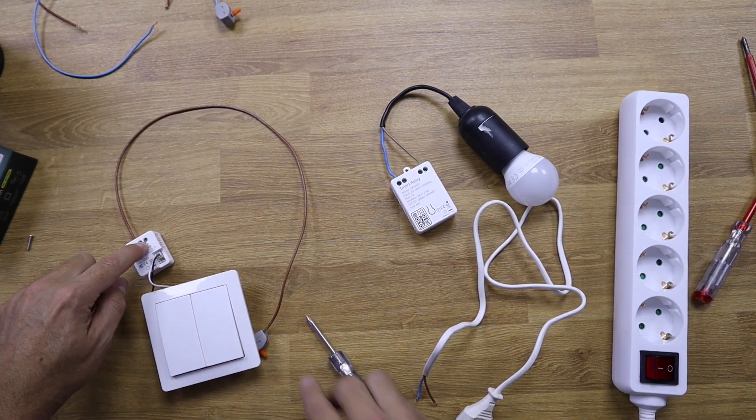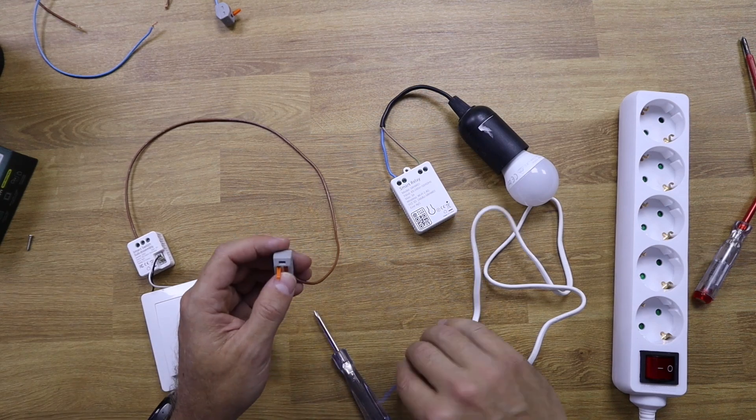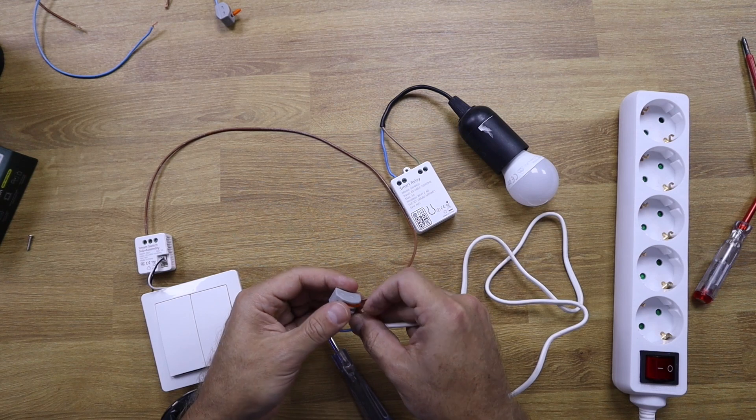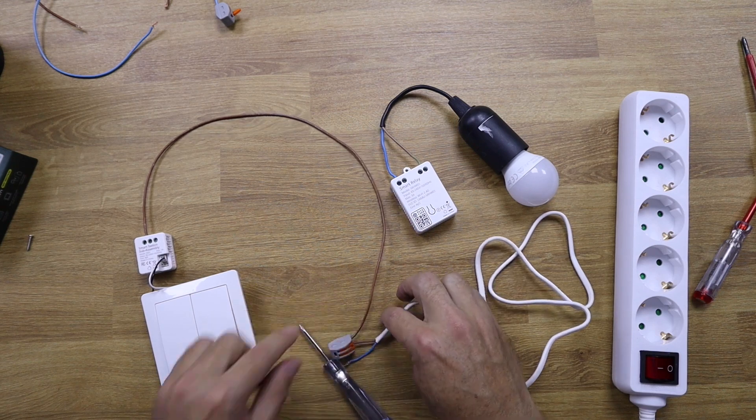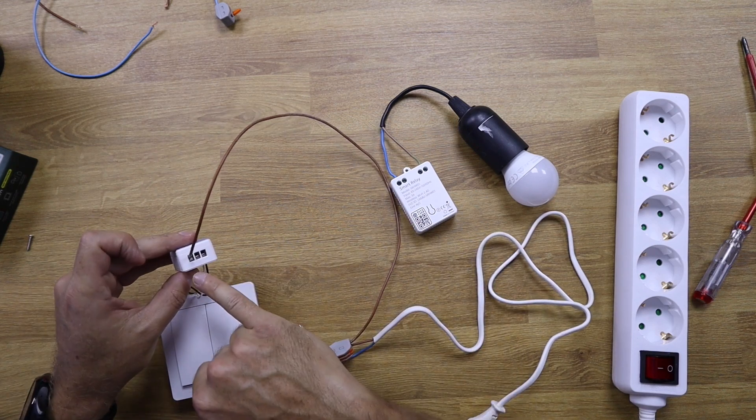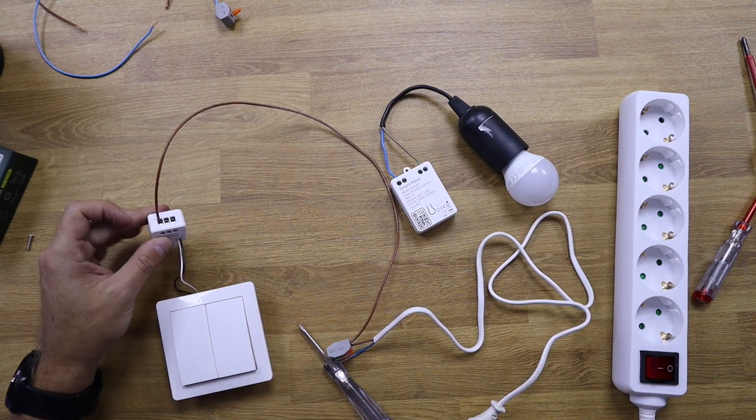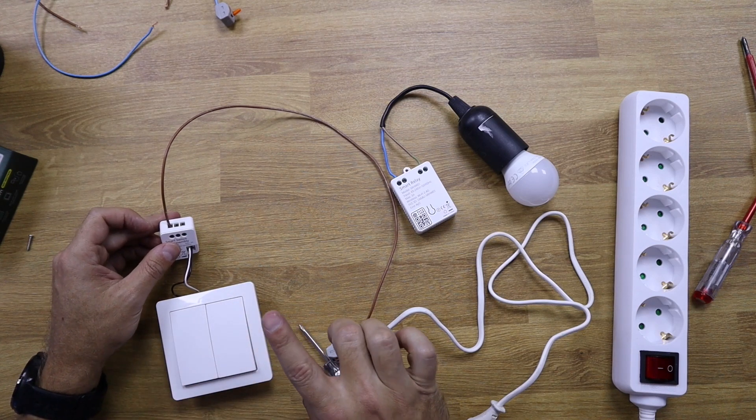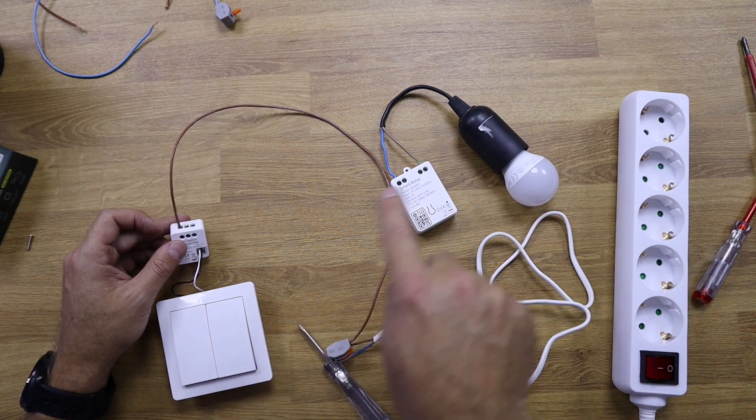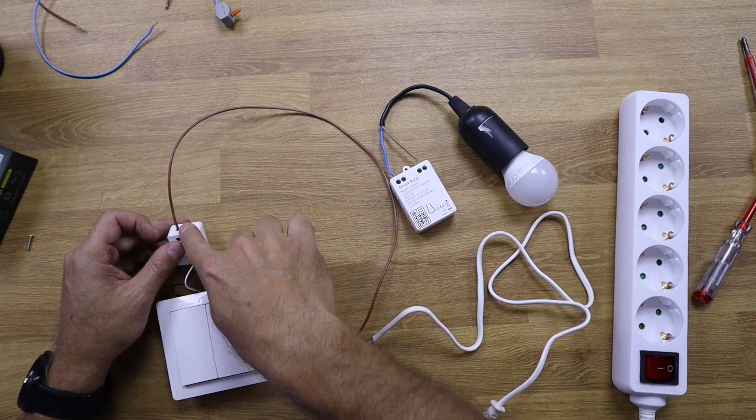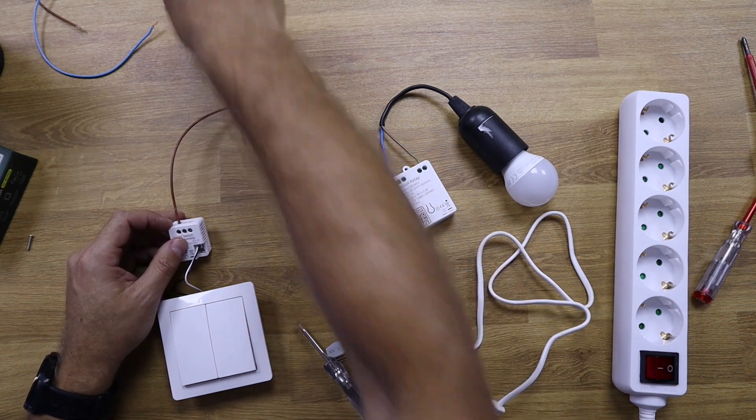Instead of putting in the live on the main switch, if we are going to use the sub-switch, what we will need to do is put the live right over here. So I'm going to connect the live to this switch, and this live cable will go to the L right over here. Basically, this is it.